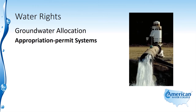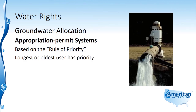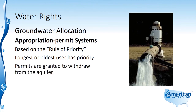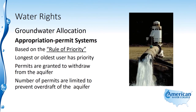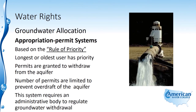Finally, there are appropriation permit systems. These systems are based on the rule of priority — the longest or oldest user has priority. Permits are granted to withdraw from the aquifer, and the number of permits is limited to prevent overdraft of the aquifer. This system requires an administrative body to regulate groundwater withdrawal.